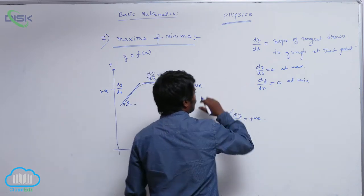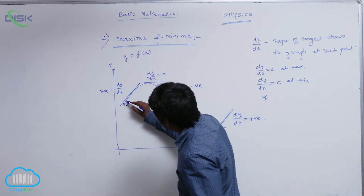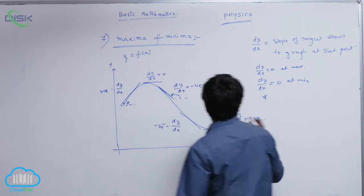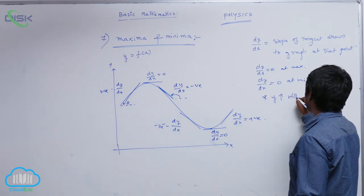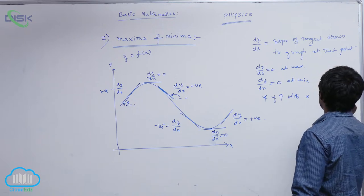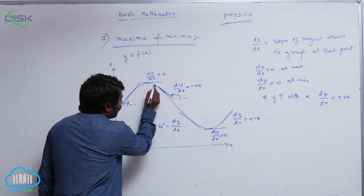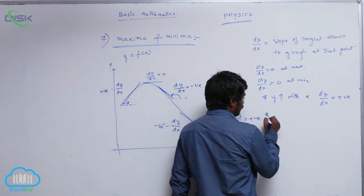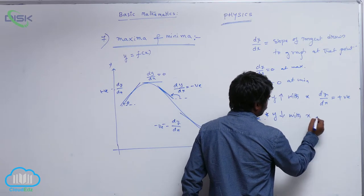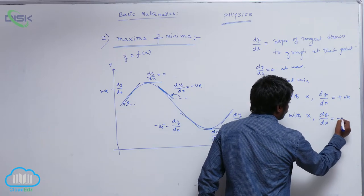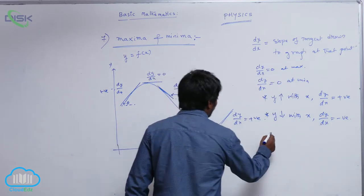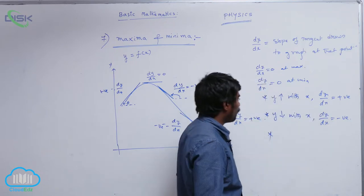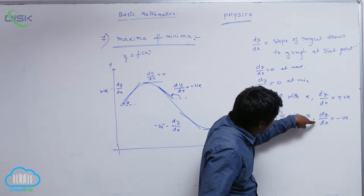One more observation: from one region to another, y is increasing with respect to x, so differentiation of y with respect to x is positive — that is, dy by dx is positive. From another region, y value decreases with x, that is why dy by dx is negative. So: y increases with x means dy by dx is positive; y decreases with x means dy by dx is negative.